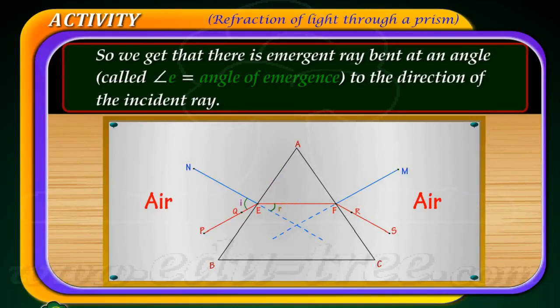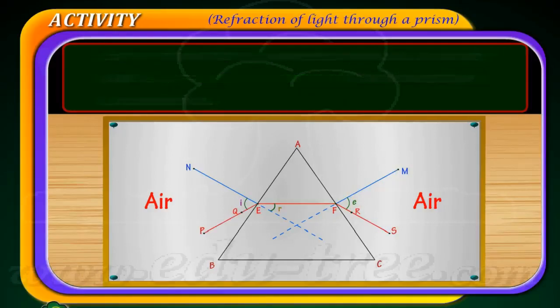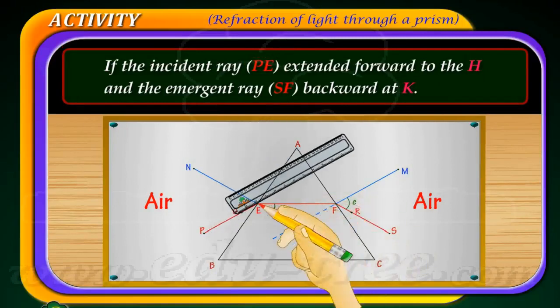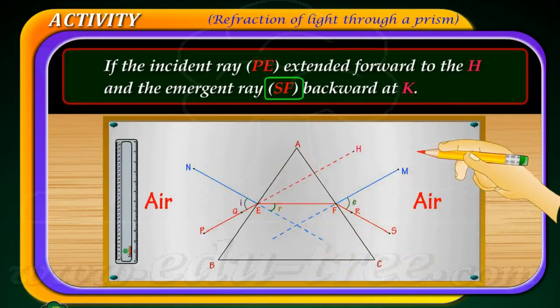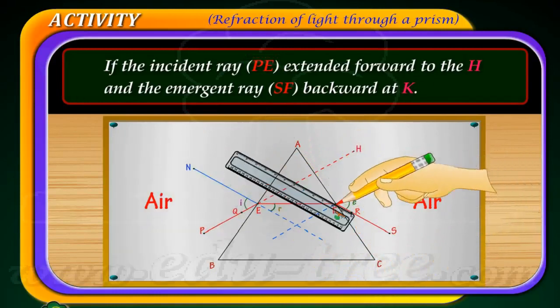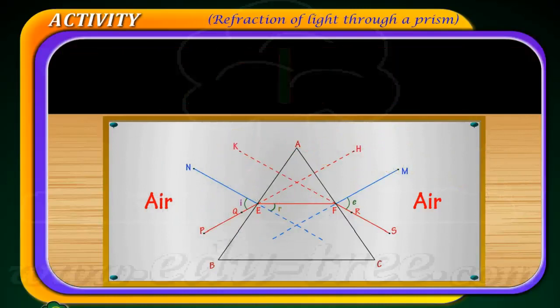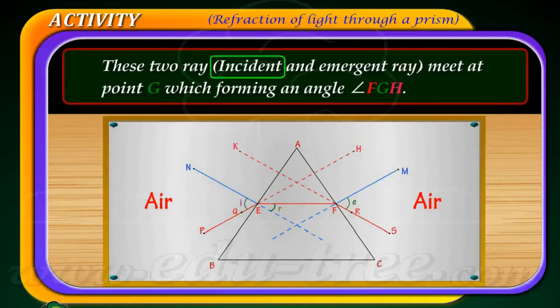So we get an emergent ray bent at an angle called angle E, the angle of emergence, to the direction of the incident ray. If the incident ray P E is extended forward to H and the emergent ray S F backward to K, these two rays meet at point G, forming an angle F G H.